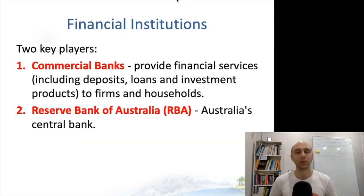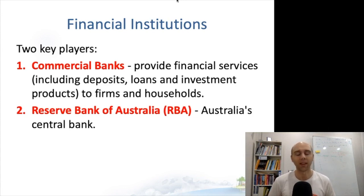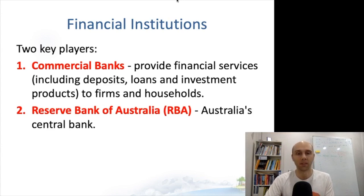Now let's introduce a few of our new economic players — the financial institutions. We've already mentioned the Reserve Bank of Australia. The other is the commercial banks. In Australia we've had an oligopoly for a long period of time with the big four banks, though recently there's been some pushback largely on account of findings from the Royal Banking Commission. They provide financial services such as deposits, loans, and investment products, not just to households but importantly to firms as well.